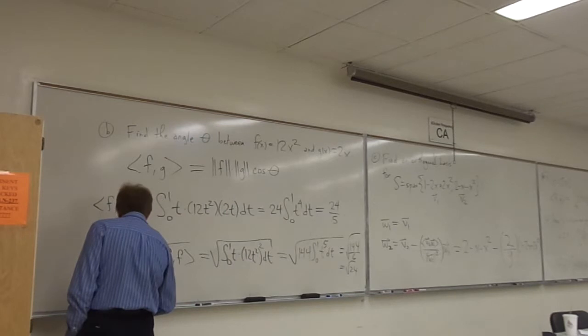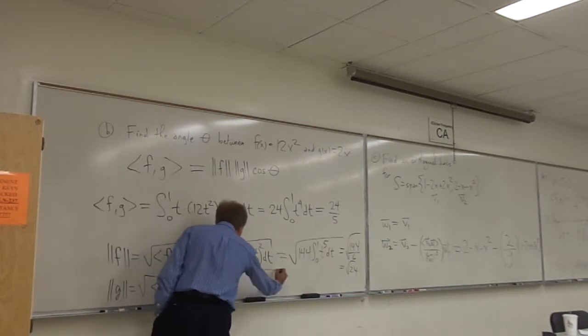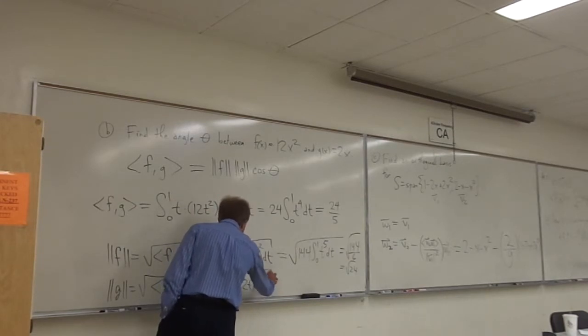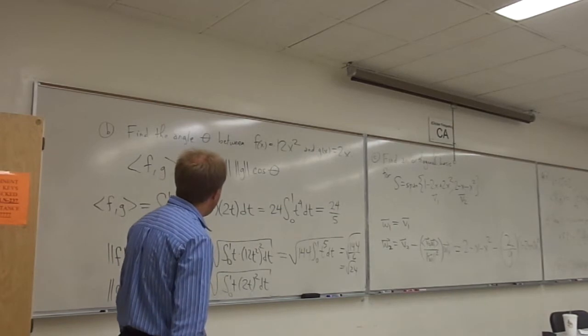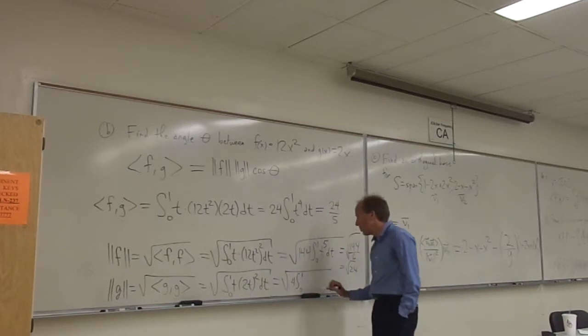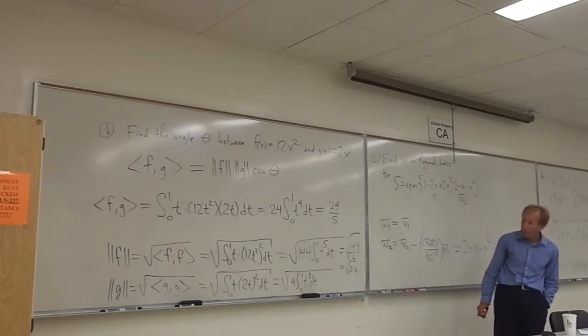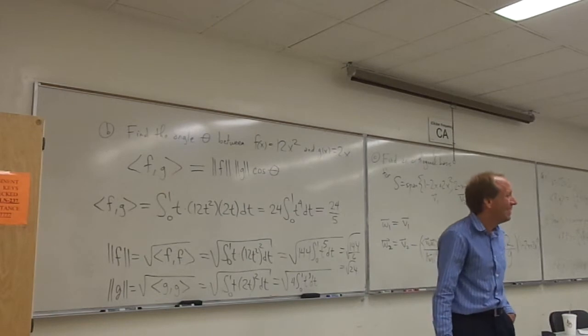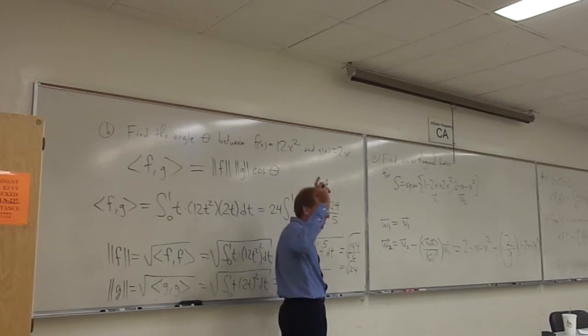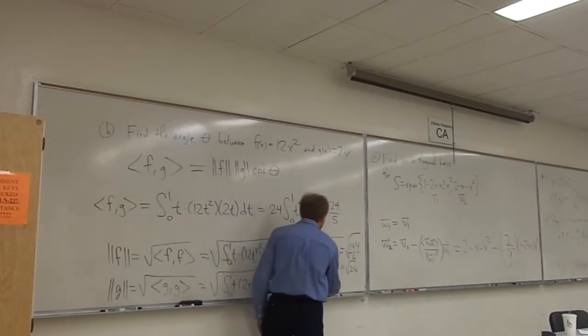Okay. And then finally, the norm of g. Last one here. The square root of the inner product of g with itself. So, that's the square root of the integral from 0 to 1 of t times the quantity 2t squared. Dt. And that becomes the square root of...we'll pull out of 4. Integral from 0 to 1 of t cubed dt. I believe. And what's the integral of t cubed? t to the fourth over 4. At least the limits are nice, right? 0 to 1. So, I just get 1 fourth out of that, I believe. And that multiplies by 4 to make 1. Square root of 1 is just 1.